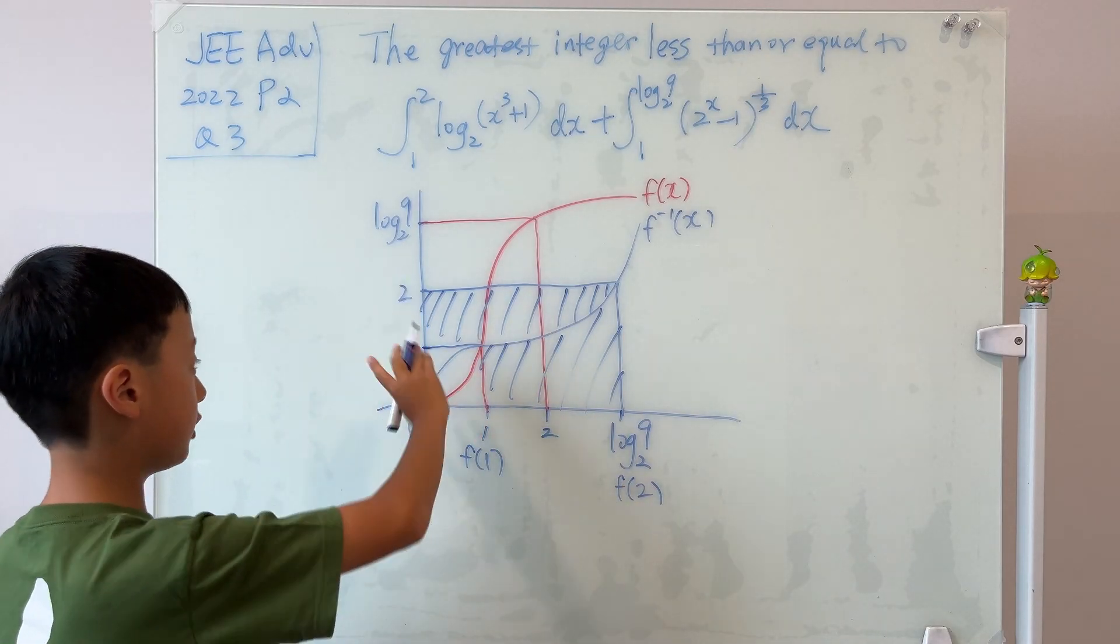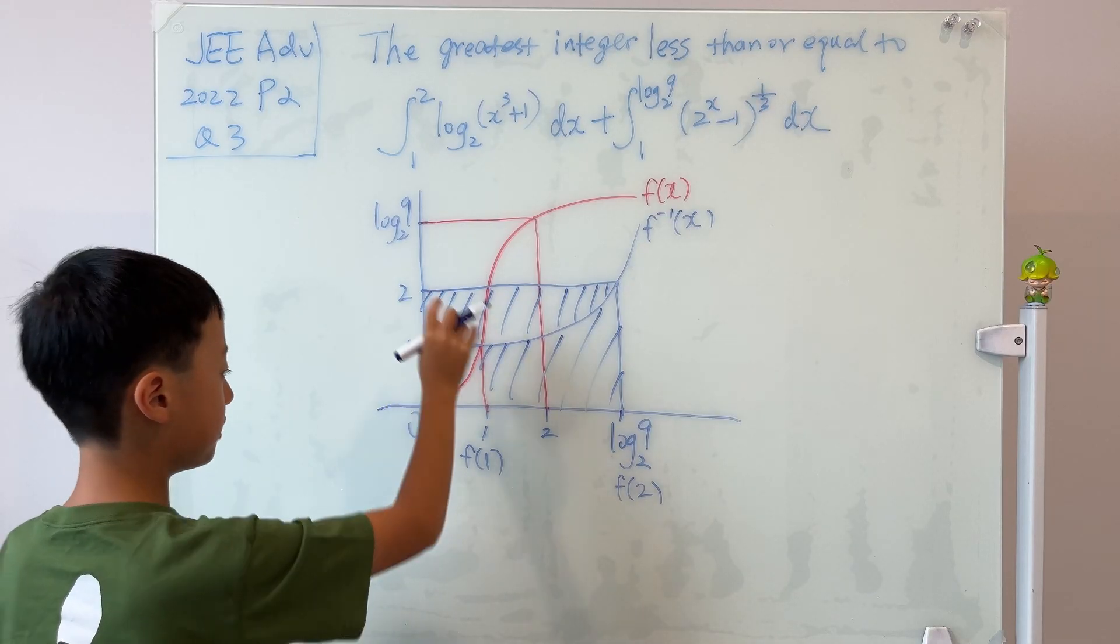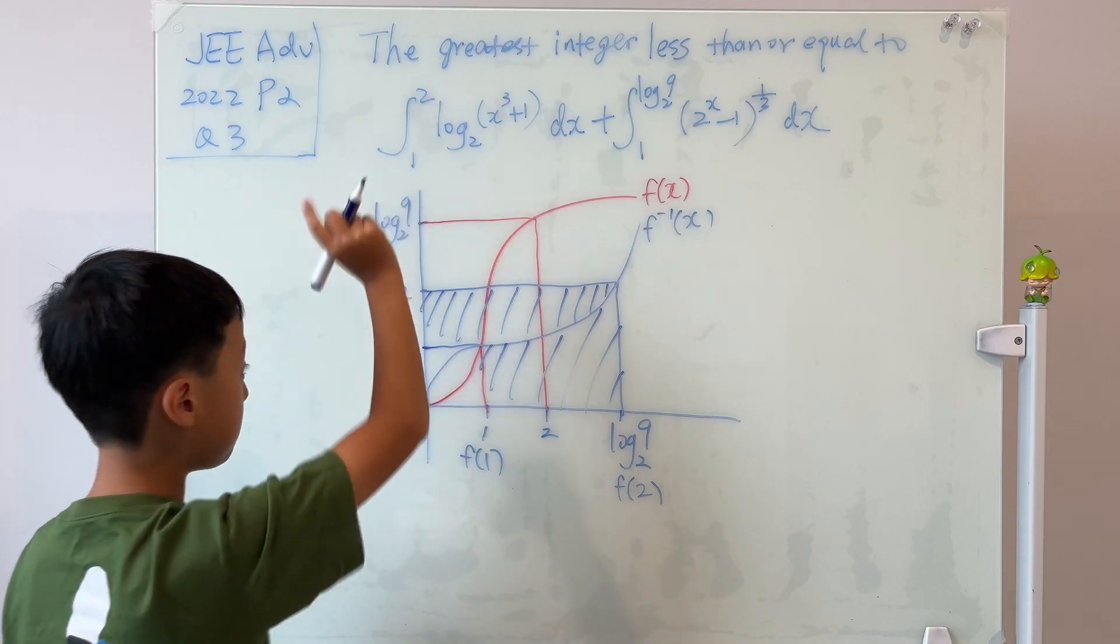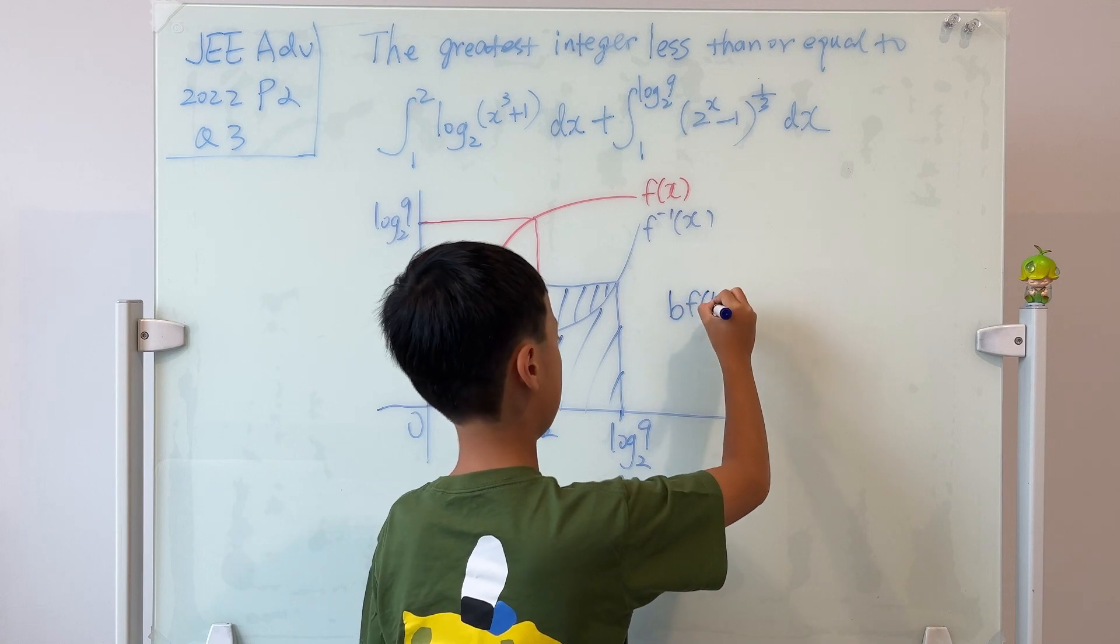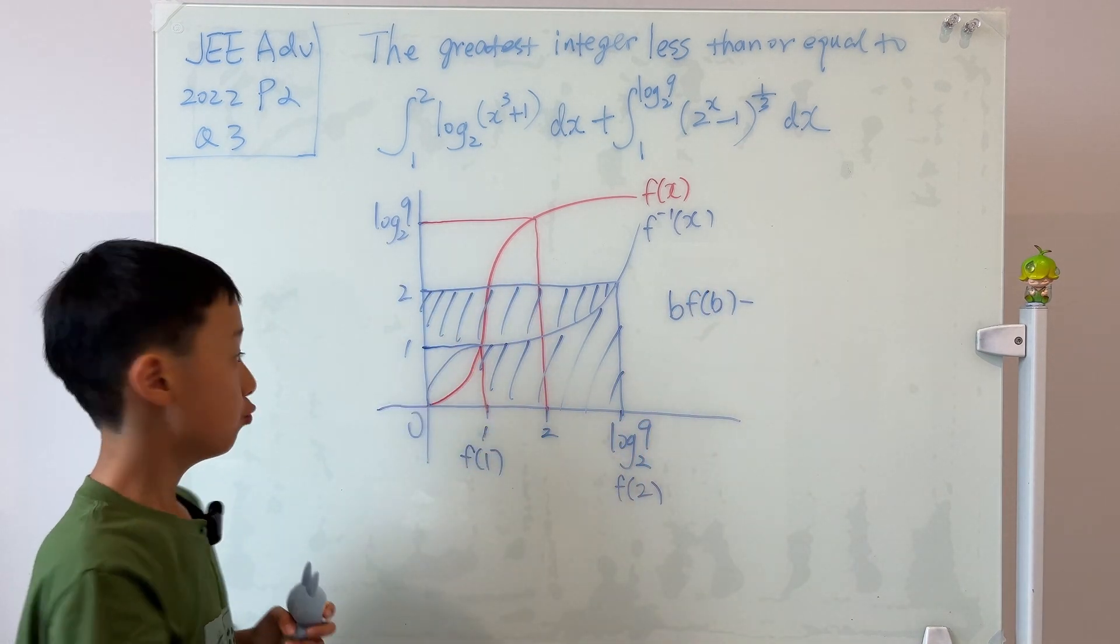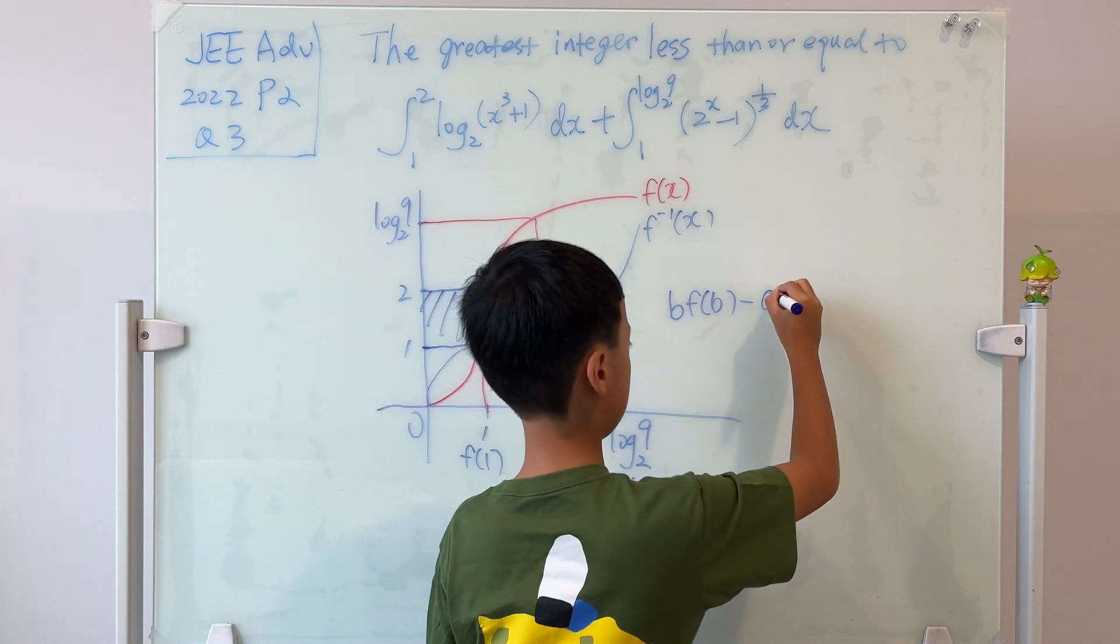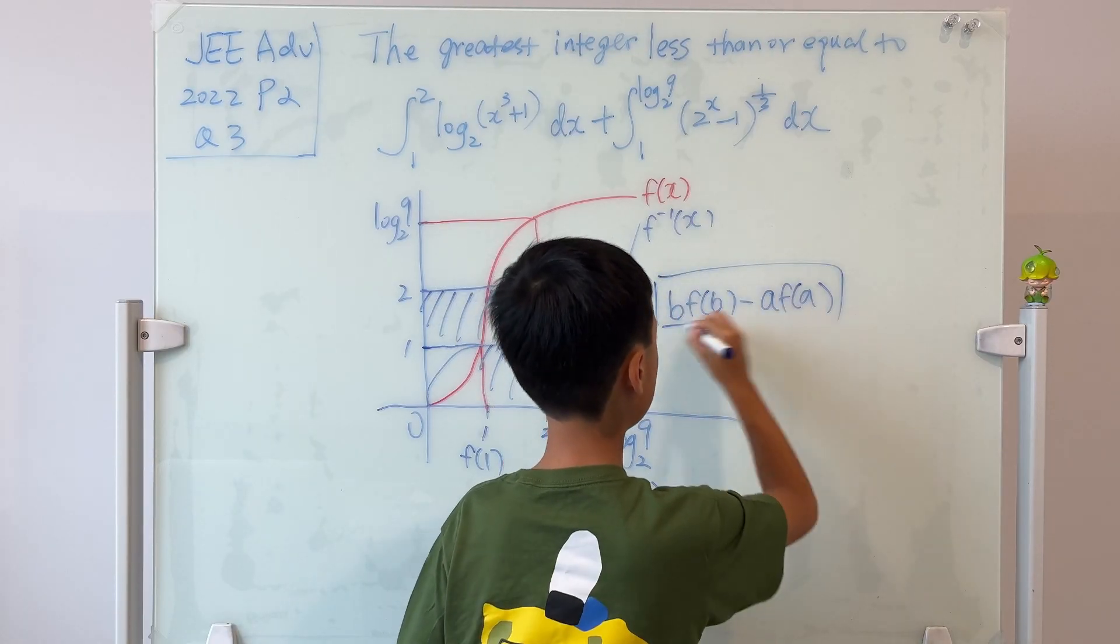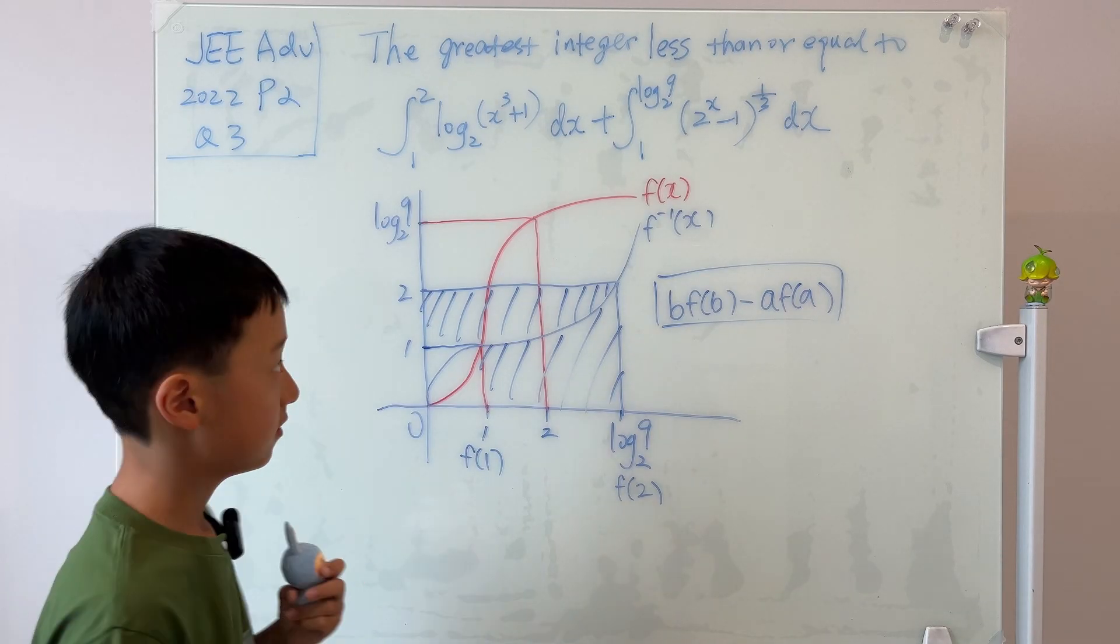So we know that the area of the whole rectangle is the distance like this, which is 2, and the distance like this, which is f(2). And 2 is the b. So it's b times f(b). And we subtract it with the area of this little square, which is 1 times f(1), which is a times f(a). Now isn't that just amazing? Yes.